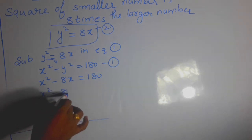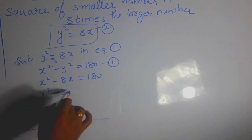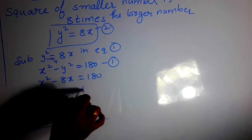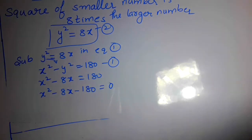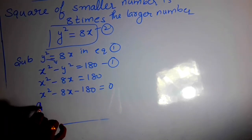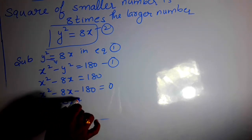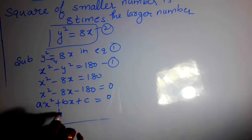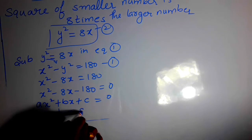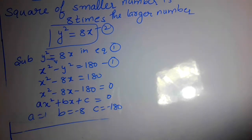Bringing everything to one side: x squared minus 8x minus 180 equals 0. Now it is in the standard form ax squared plus bx plus c equals 0. Here the value of a is 1, b is minus 8, and c is minus 180. We will now apply the quadratic formula to find the roots.